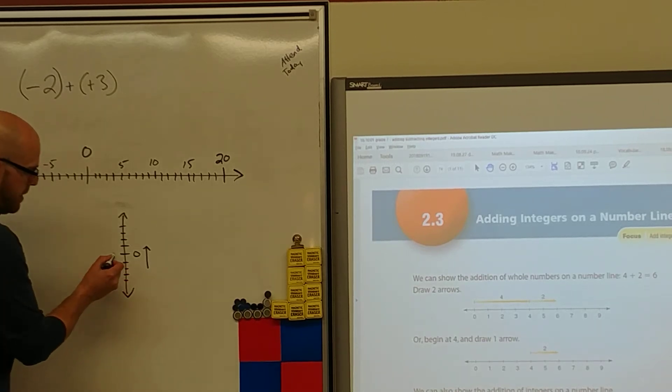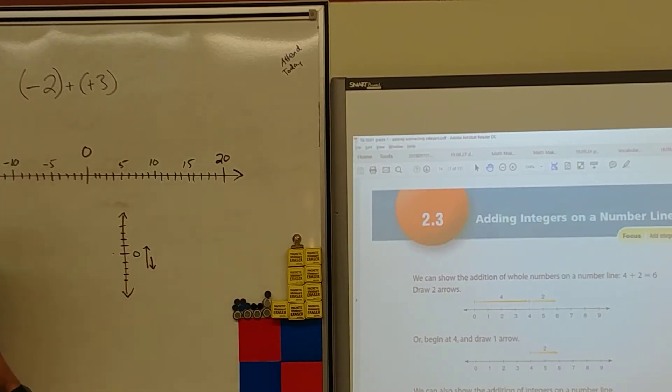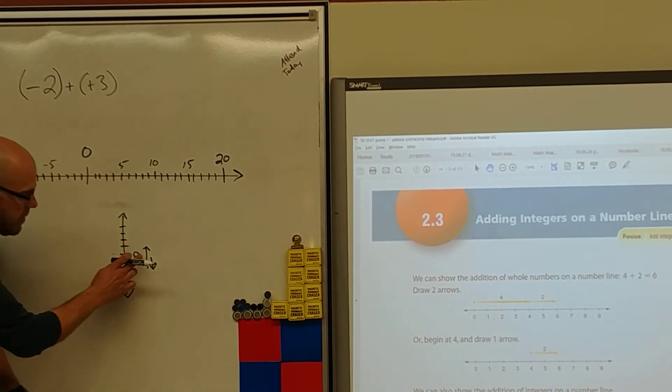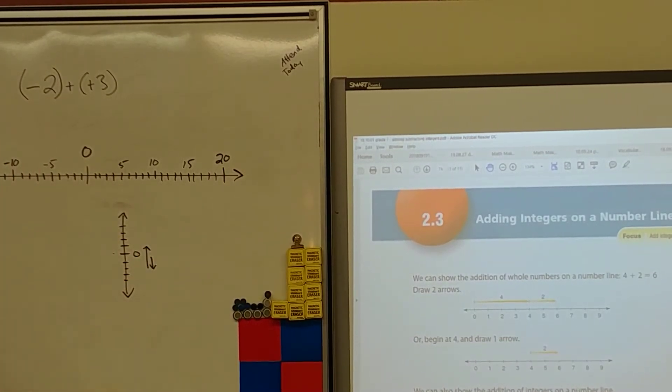But I could also say if the temperature went down 2 degrees, it was at 0, it went down 2 degrees, then it went up 3 degrees. What temperature is it now? Up at 1. Start at 0, down 2 degrees, and went up 3 degrees. Plus 1 still, yeah.